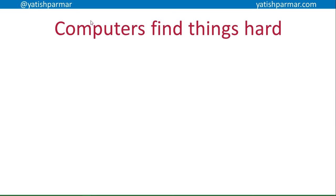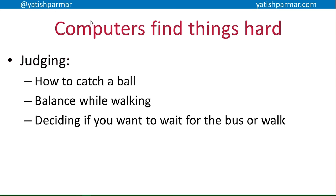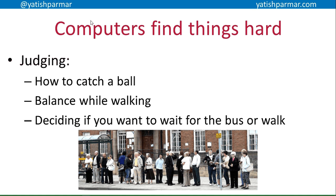Why is AI taking so long to develop? Basically, computers find things hard. If you think about yourself as a human, you're able to judge things — someone throws something at you, you figure out how to catch it. You can balance while walking, not just on a flat surface but upstairs, downstairs, up a slope, down a slope, on a beam, in wet or dry conditions, on snow, on ice. You can decide whether to wait for the bus or start walking, evaluate whether it's busy, draw on background knowledge about where you need to get to and how long it will take. How do you get a computer to do those kinds of things?